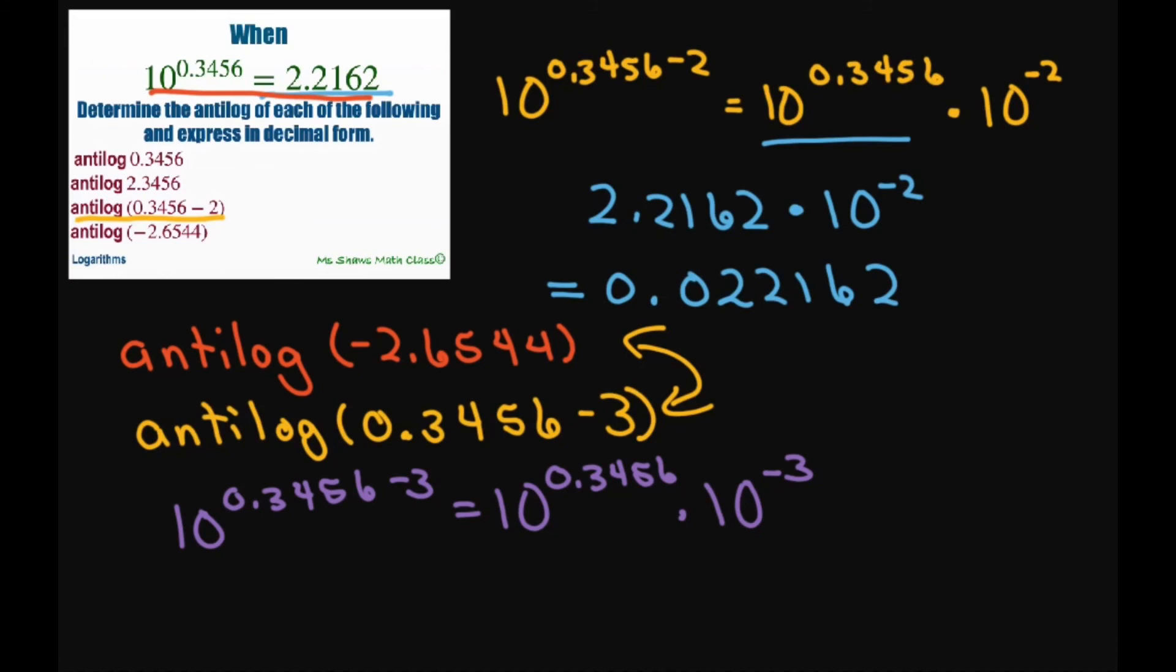All right, this gives you 2.2162 times 10 to the power of negative 3. So you have to move this decimal place over by 3. And that's going to give you 0.0022162. And that is your answer.